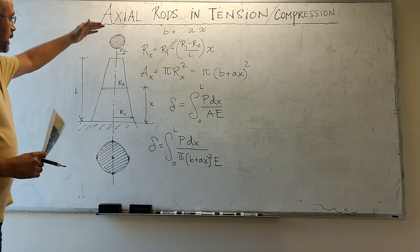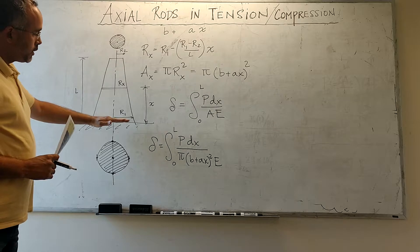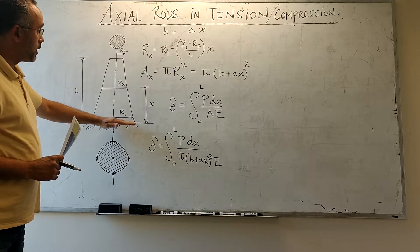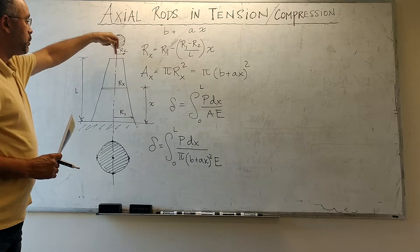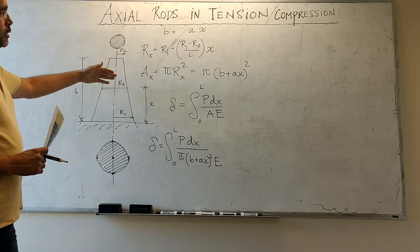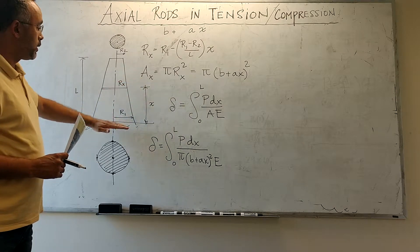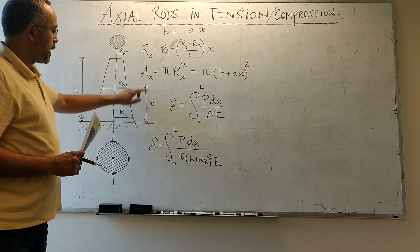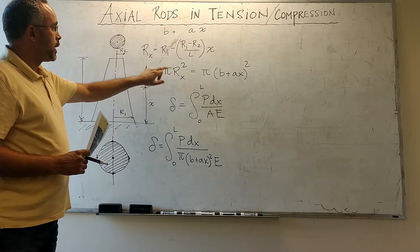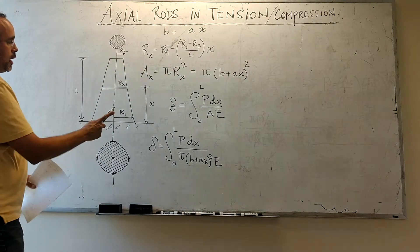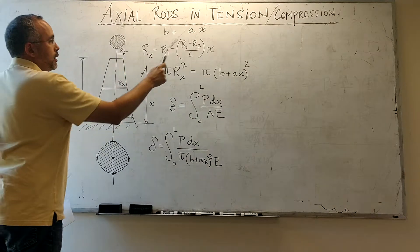Now we're going to look at the axial deformation of a truncated cone with radius r1 at the fixed end and radius r2 at the free end where the load is being applied. Similar to the previous case, we are going to express the cross-sectional area as a function of X — it's going to be π times radius squared, and the radius is a function of X as r1 minus (r1 minus r2) divided by L, times X.